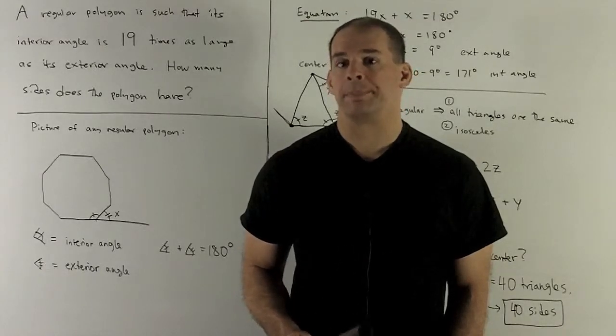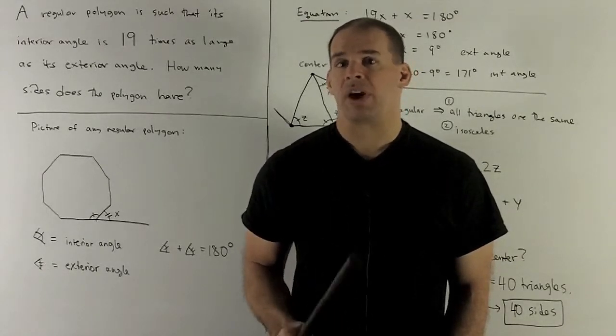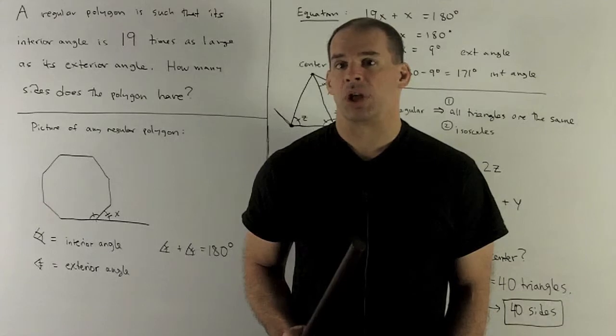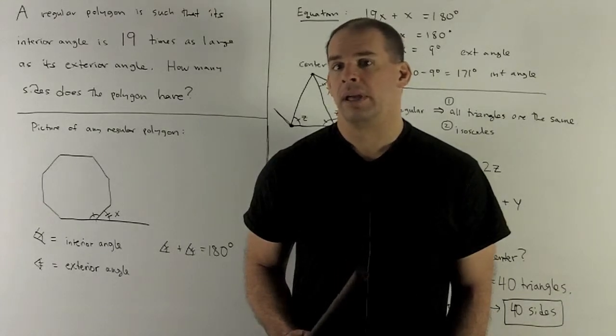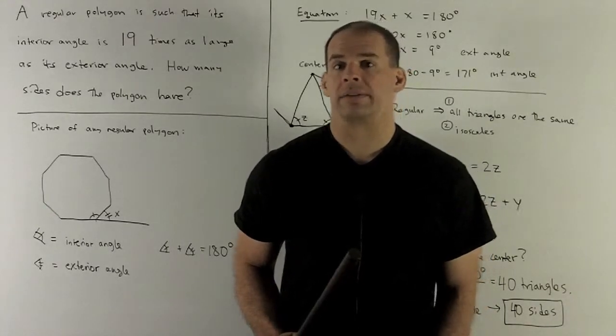Suppose we have a regular polygon such that the interior angle is 19 times as large as the exterior angle. How many sides does the polygon have?